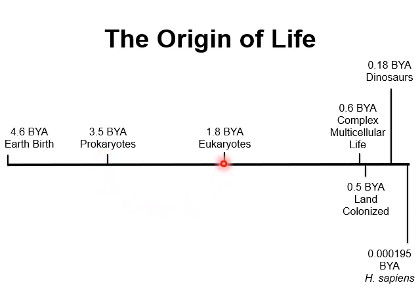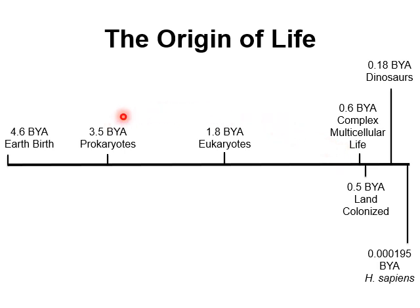It was about 1.8 billion years ago that eukaryotes showed up. The key difference between prokaryotes and eukaryotes is that eukaryotes are more complex and have a nucleus with DNA inside, whereas prokaryotes are way less complex with no nucleus. About 0.6 billion years ago — that's 600 million years ago — we see the first complex multi-celled life, when life took the big leap from single-celled forms into multicellular living things.